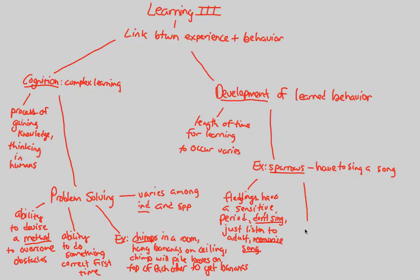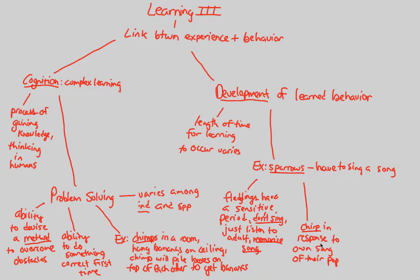After memorizing, these young fledglings will chirp — making small chirping noises in response to their own population's song. Sparrows innately know what is correct and what is not, but they just don't know how to sing it yet. When they hear the correct song, they chirp as a response to confirm: this is my population's song that I have to eventually learn.